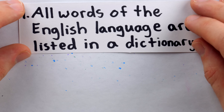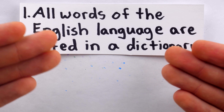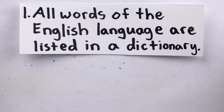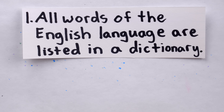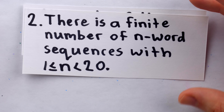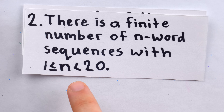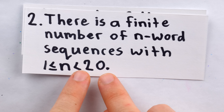Let's begin by walking step by step through the sequence of arguments which brings us to Barry's Paradox. First, we assume that all words of the English language are listed in a dictionary. Pick any standard dictionary you like, and we shall accept that as the collection of English words relevant to this argument. Having agreed on a standard dictionary, we know that there is a finite number of word sequences where the length is at least 1 and less than 20.